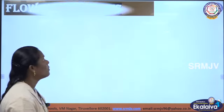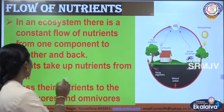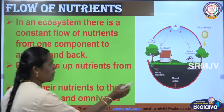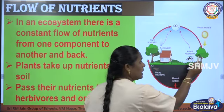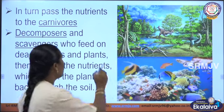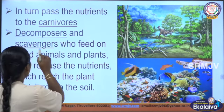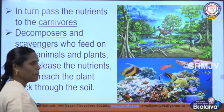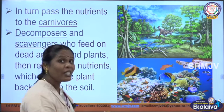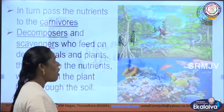Next is flow of nutrients. In an ecosystem, there is a constant flow of nutrients from one component to another. Plants absorb nutrients from the soil and pass them to herbivores; herbivores pass nutrients to carnivores. When carnivores die, decomposers and scavengers feed on the dead organisms. After decaying, the matter is used as fertilizer, and plants absorb the nutrients again. This cycle is called the flow of nutrients.